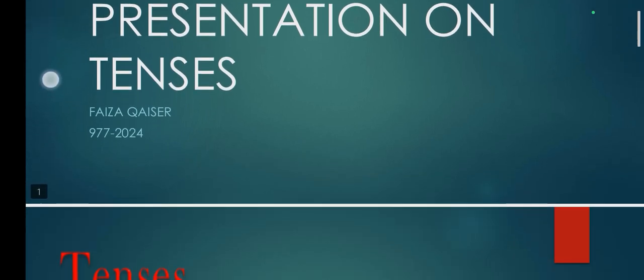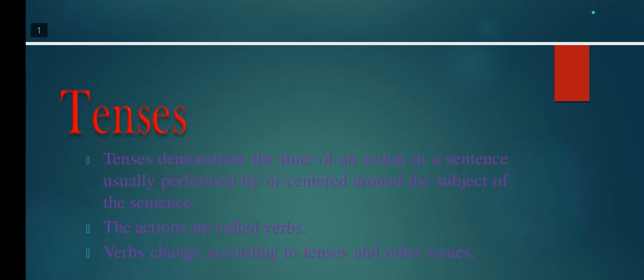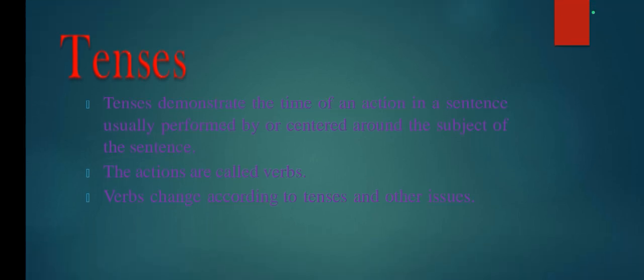Tenses demonstrate the time of an action in a sentence, usually performed by or centered around the subject of the sentence. The actions are called verbs. Verbs change according to tenses and other issues.